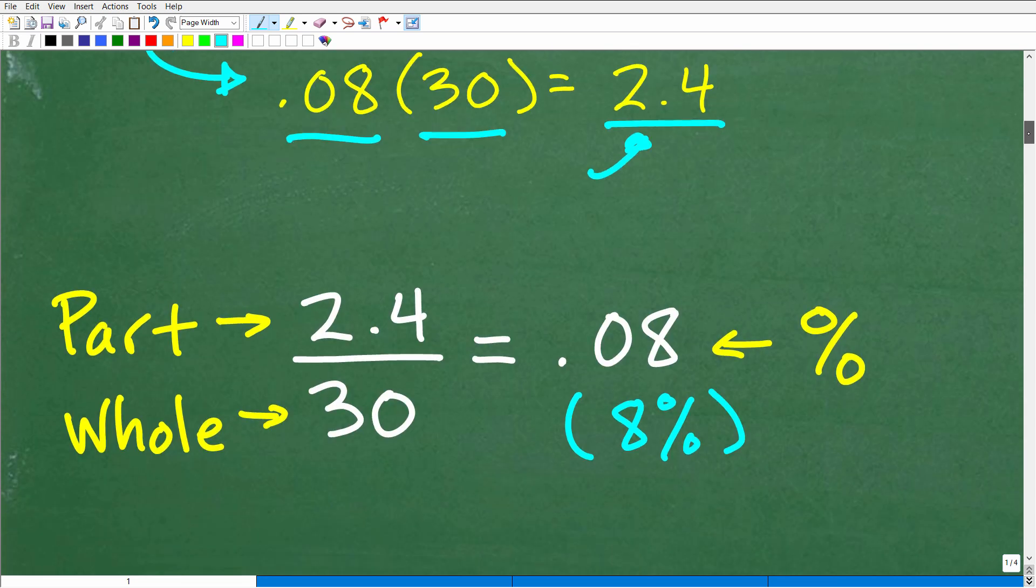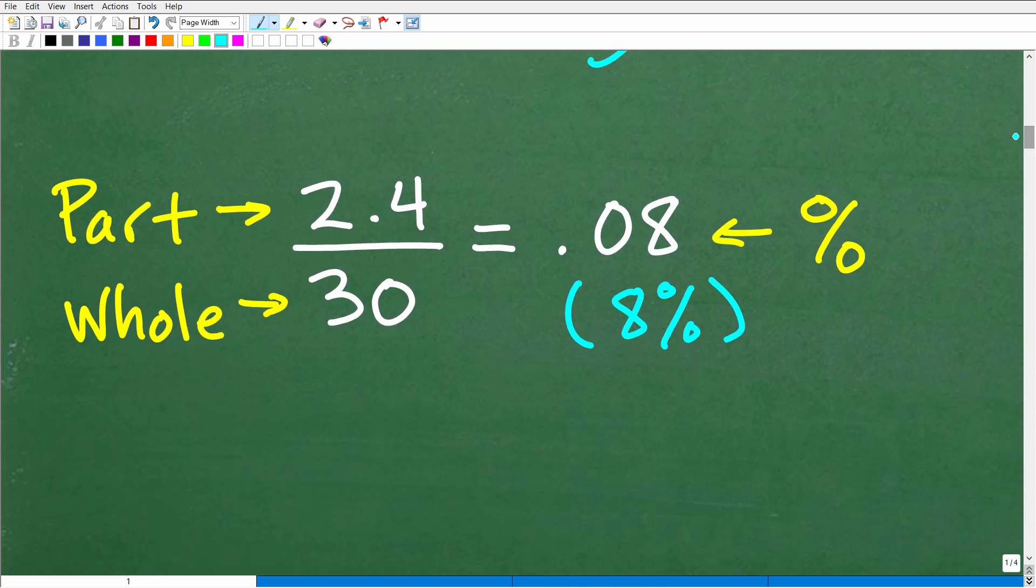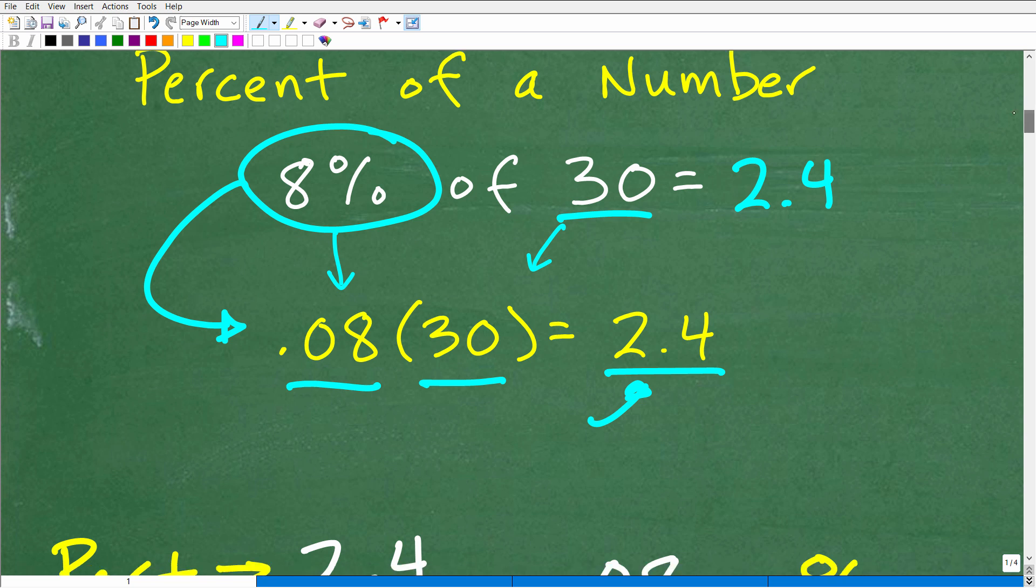So we have 8% of 30 is equal to what? Well, the answer was 2.4. So what does that mean? We can look at this scenario in a couple of different ways. If I take 2.4 and divide it by 30, I'm going to get 0.08. So if I asked you, 2.4 is what percent of 30? Well, 2.4, we know, is 8% of 30, right? So let's go back up here. 8% of 30 is what? 2.4. So we're just kind of reshuffling the sentence.